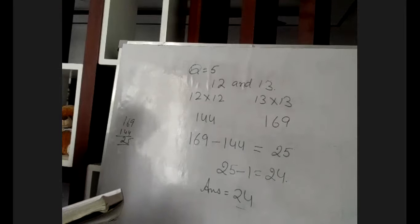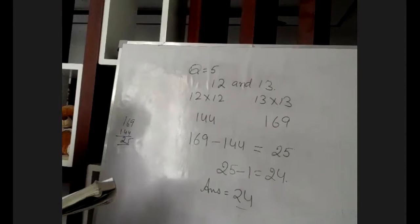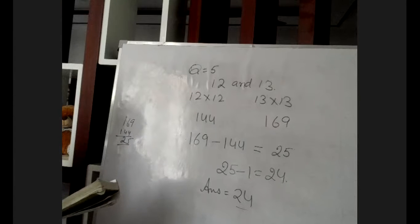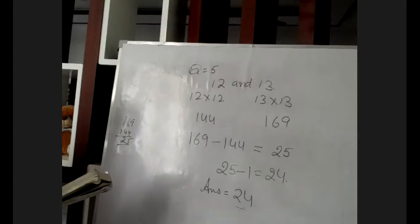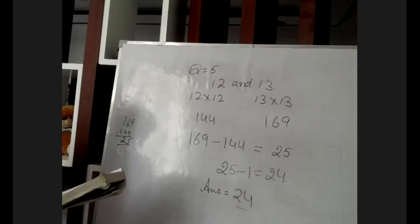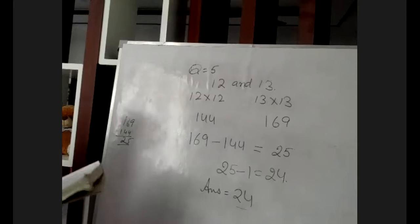Second part of question 5: numbers are 35 and 36. Using the same method, first multiply 35 into 35, then 36 into 36. In the second step find the difference, then subtract 1 to find the natural numbers lying between these two squares.